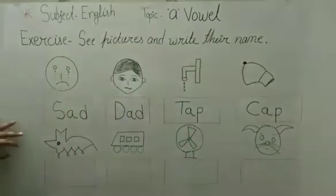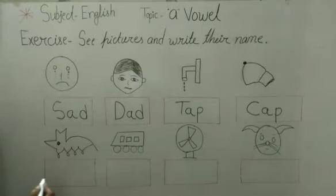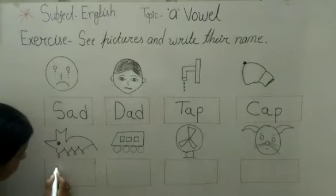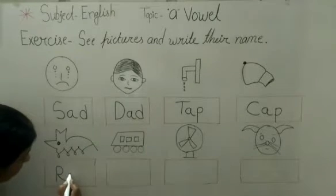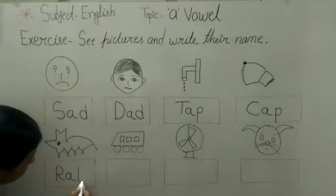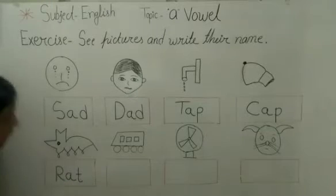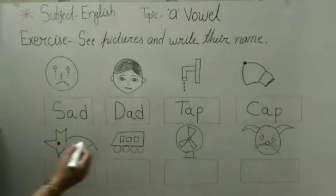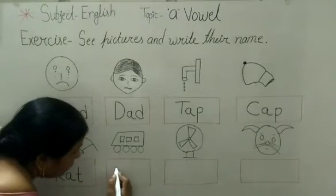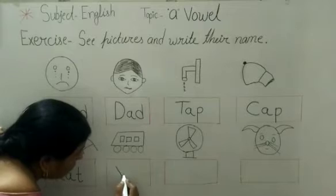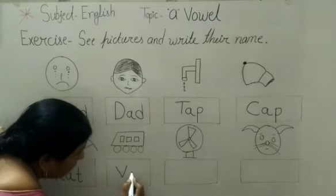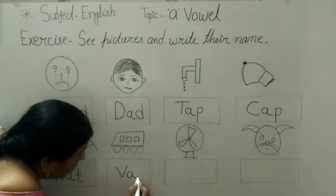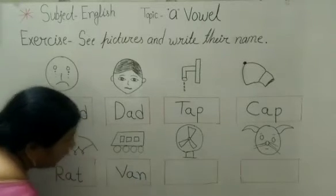And 'red'. R, A, P. Red. This picture is 'rain'. V, A, F. Rain.